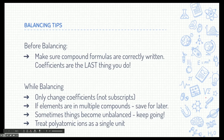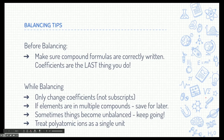Before we do that, here are a few balancing tips. First, before you even talk about coefficients, make sure that your compound formulas are correctly written — the coefficients are the absolute last step. When you balance, you should only change coefficients; never touch the subscripts, including polyatomic ions or ionic and covalent compound formulas. If elements are in multiple compounds, save them for later since they can get messy. Sometimes things become unbalanced — I call this the 'clean your room' symptom. Just keep trying; eventually things will be cleaned up. Lastly, treat polyatomic ions as a single unit.